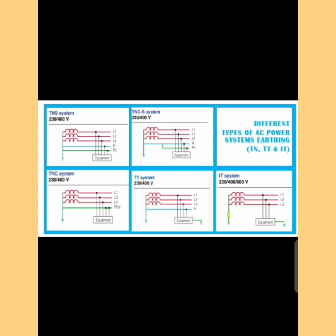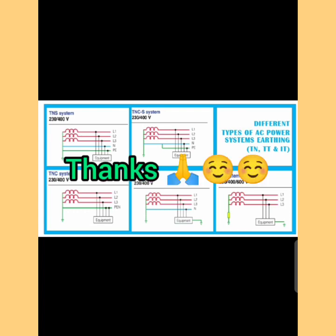In the TT system, both the load and the source are connected to ground independently — they are not connected together. In the IT system, I stands for isolation and T for Terra (earth). It is an ungrounded system, and at the load, equipment is grounded independently through a dedicated earth. This was the small information.